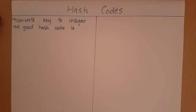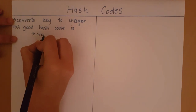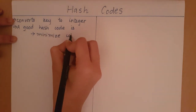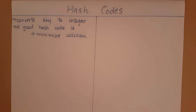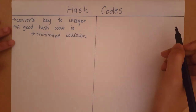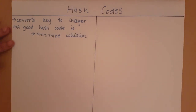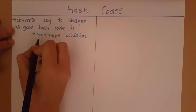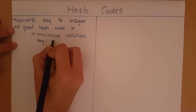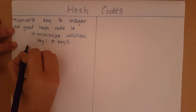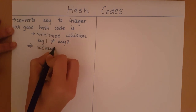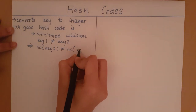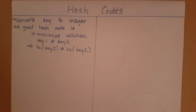The first property of a good hash code is it will minimize collisions. This means that given two keys which are different, their hash codes should also be different. So if key one does not equal key two, then the hash code of key one should also not equal the hash code of key two. If two different keys are mapped to the same hash code, we say a collision has occurred — we don't want this. For different keys we want different hash codes, so we want to minimize collisions.